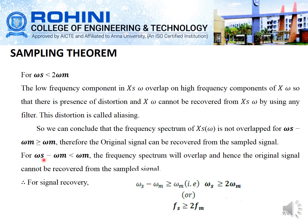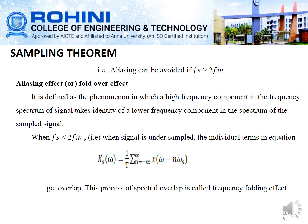When ω_s minus ω_m is less than ω_m, the frequency spectrum will overlap, and hence the original signal cannot be recovered from the sampled version. Therefore, for recovering the signal, the condition fs greater than or equal to 2·fm must be satisfied. Aliasing can also be avoided if fs is greater than or equal to 2·fm.